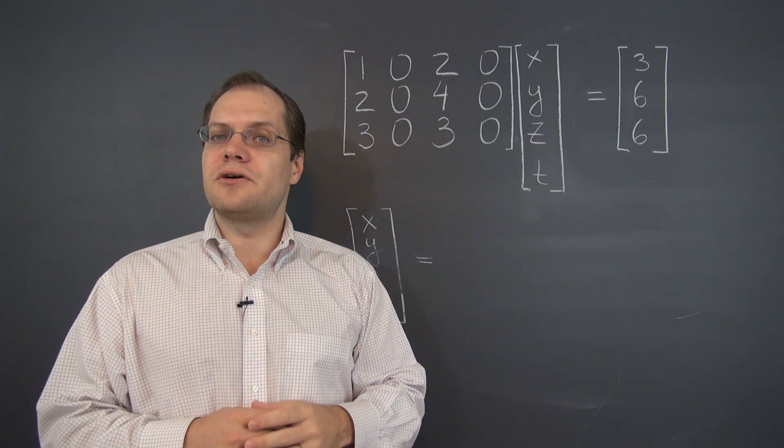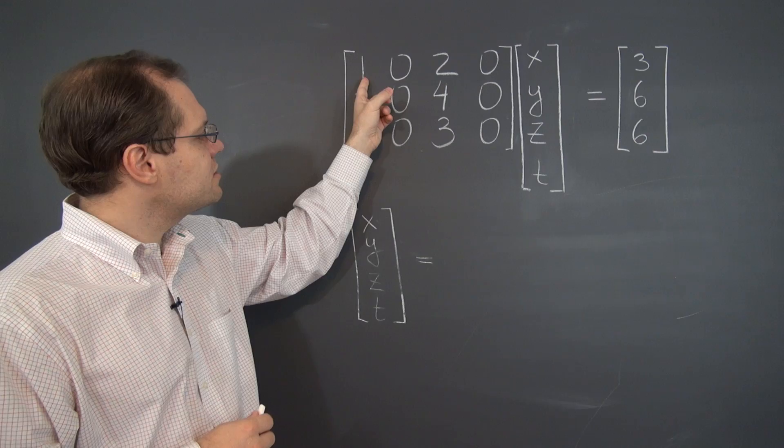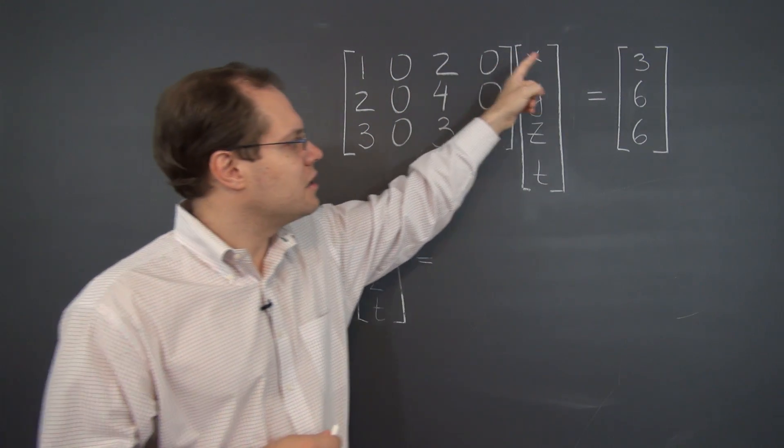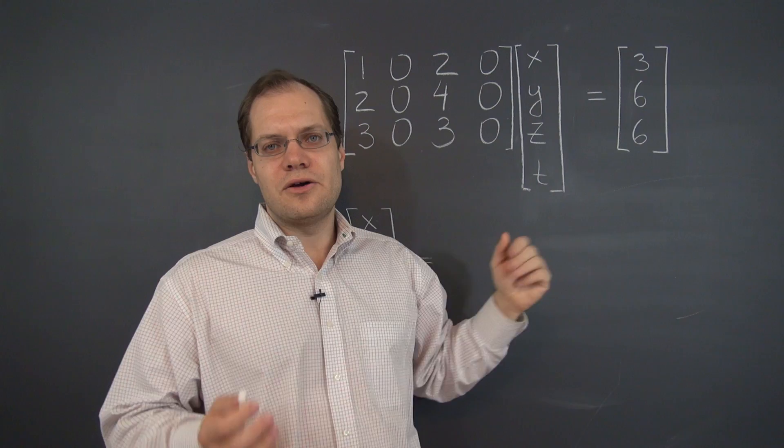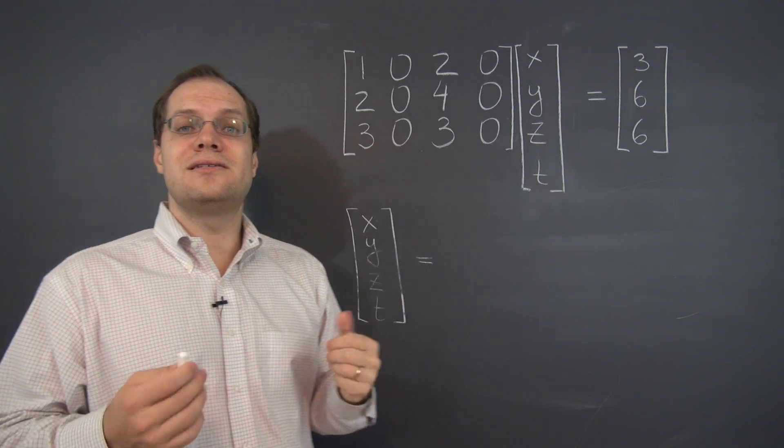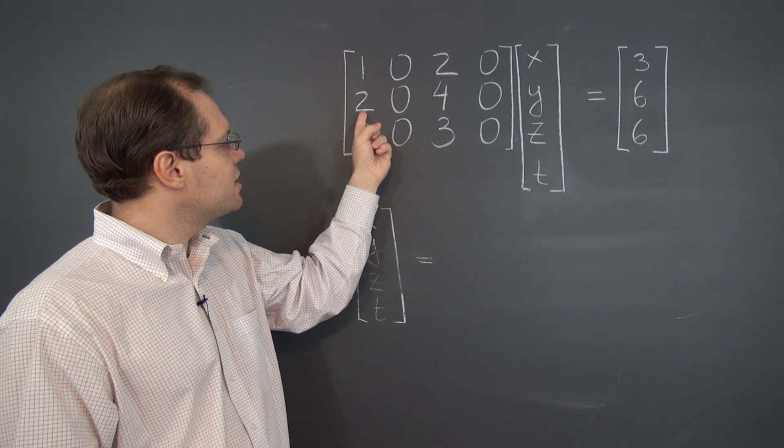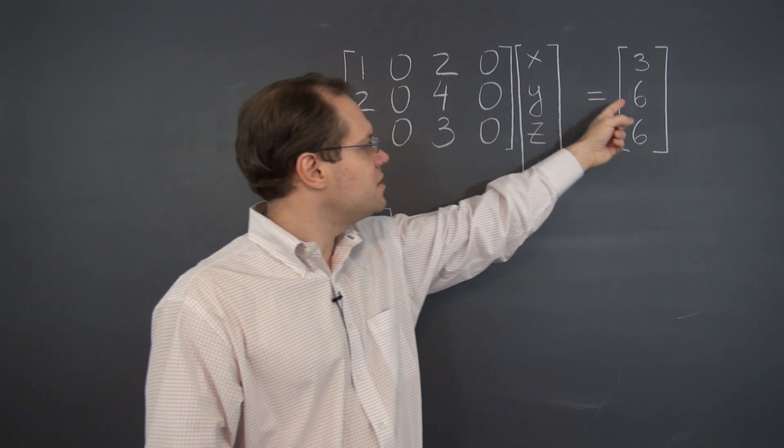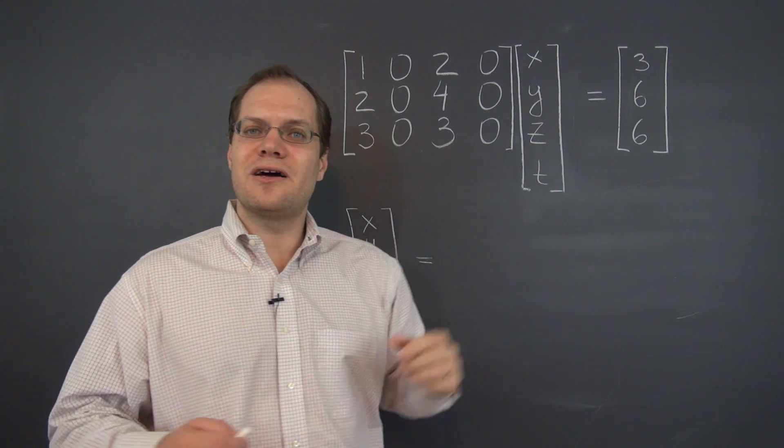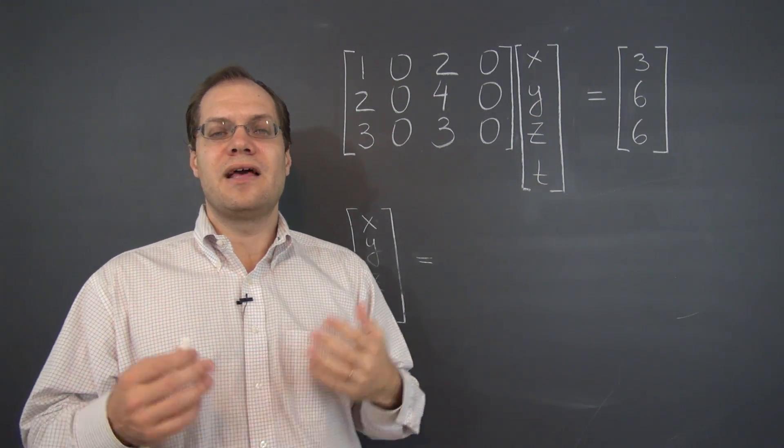For example, the first equation would read x plus 2z equals 3. No y or t. Similarly, the second equation would read 2x plus 4z equals 6. Once again, we're not hearing from y and t, and so forth.